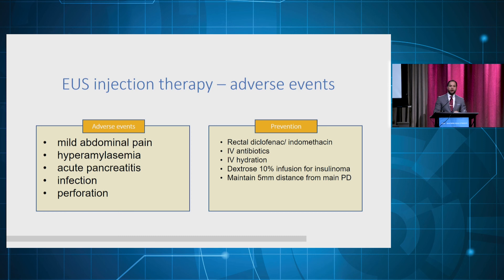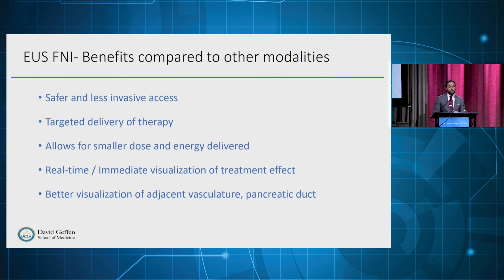We need to keep in mind the potential adverse events of these techniques, ranging from mild abdominal pain to hyperamylasemia, acute pancreatitis, infection, and perforation. Preventive measures include rectal indomethacin as used for ERCP, perioperative IV fluids and hydration, antibiotics, dextrose infusion for insulinoma, and as a general rule, staying about 5 mm away from the pancreatic duct. EUS-injection is safe and helpful because it allows direct delivery and real-time assessment of treatment effect.